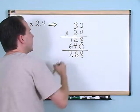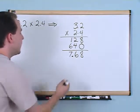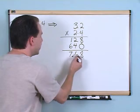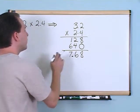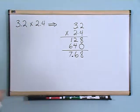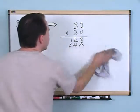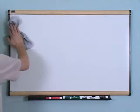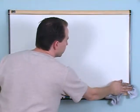Notice this is a little different from addition and subtraction. When you add and subtract you line the decimals up and drag the decimal down. Here you do the multiplication exactly as usual, then count the total decimal digits and move left that many places from the right — 1, 2 — and 7.68 is the answer.